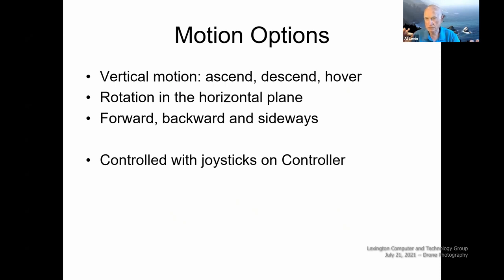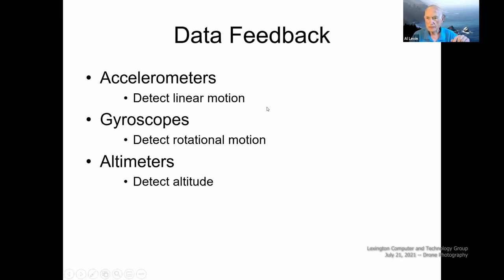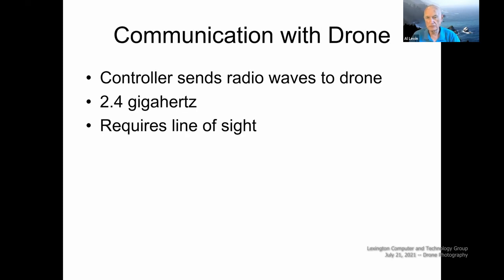The joysticks send messages to the internal computer that integrates the individual motion of the four motors. The motions are facilitated by data feedback from devices you know a lot more about than I do — accelerometers, gyroscopes, and altimeters. The feedback is almost instantaneous. You've got a drone flying up in the sky being buffeted by wind — how do you maintain a perfect level hover? Feedback from this data.